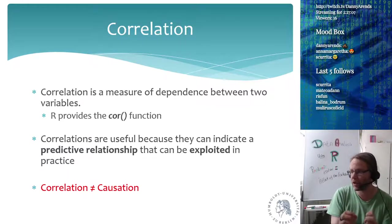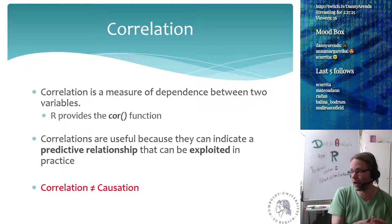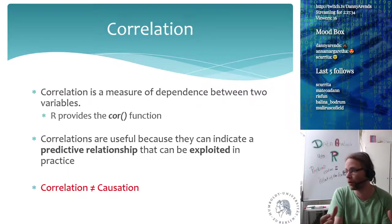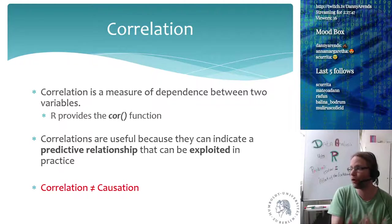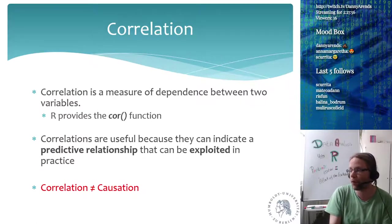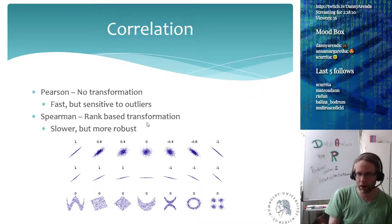We still bother with correlations because they indicate predictive relationships that can be exploited in practice. For example, if stock prices go up when the weather is bad and down when the weather is good, there's a correlation between temperature and the stock price. Even if there's no causal relationship, you can still invest smarter. If you know two things are correlated and you have a prediction of one variable, you indirectly know what will happen to the other.